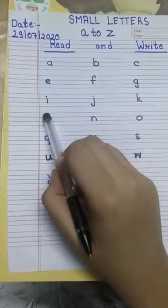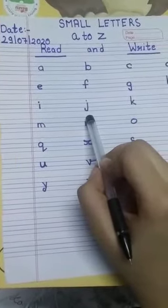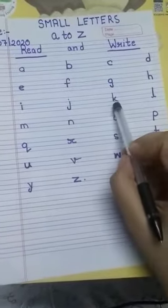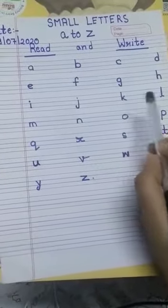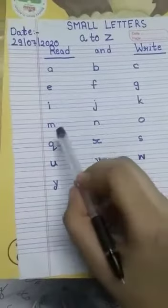I, I for ice cream. J, J for jug. K, K for kite. L, L for lion.